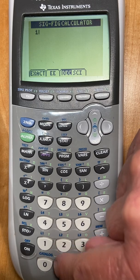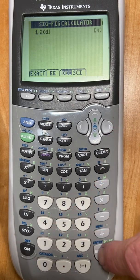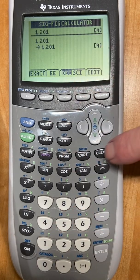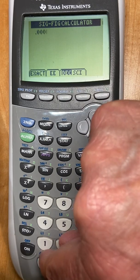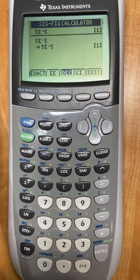Clear. What if I have 1.201, there you go, 4 SIG-FIGs. Clear. How about if I have .00005, enter. Oh, 1 SIG-FIG.